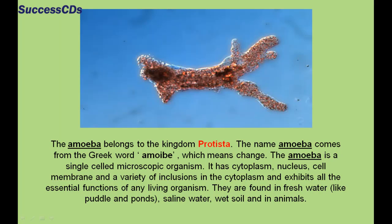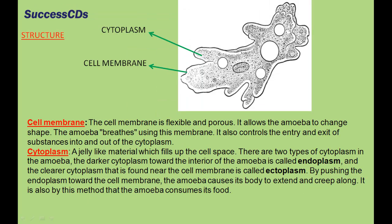Amoeba is found in fresh water like puddles and ponds, saline water, wet soil, and in animals. The cell membrane of an amoeba is flexible and porous. It allows the amoeba to change shape. The amoeba breathes using this membrane. It also controls the entry and exit of substances into and out of the cytoplasm.